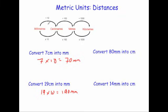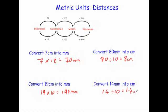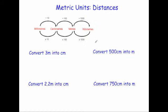Now we're going to look at going the other way — from millimetres to centimetres you divide by 10. Convert 80 millimetres into centimetres: 80 divided by 10 is 8, so 80 millimetres equals 8 centimetres. For 14 millimetres, we do 14 divided by 10, which gives 1.4 centimetres.